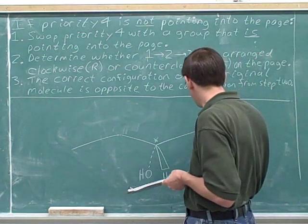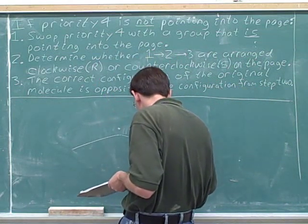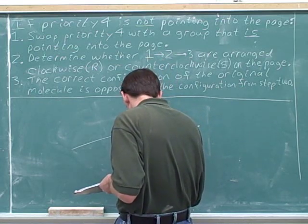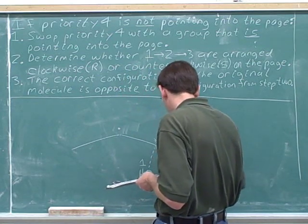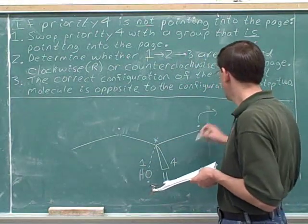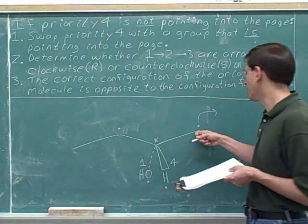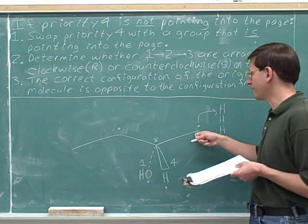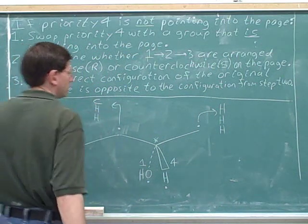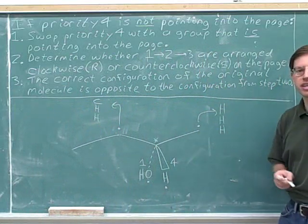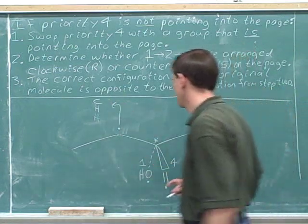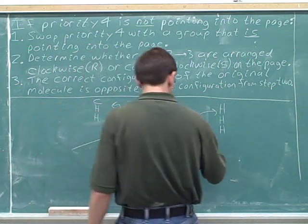Now we determine the priorities. Let's put dots in for the directly connected atoms. The oxygen gets the number one priority. The hydrogen gets the number four priority. But the carbon on the right is tied with the carbon on the left, so let's make a list of the three atoms each dotted carbon is attached to. The methyl carbon has three hidden hydrogens, while the ethyl carbon on the left has one carbon and two hidden hydrogens. The first point of difference: this carbon beats this hydrogen. So on the left we have number two priority, and on the right number three priority.